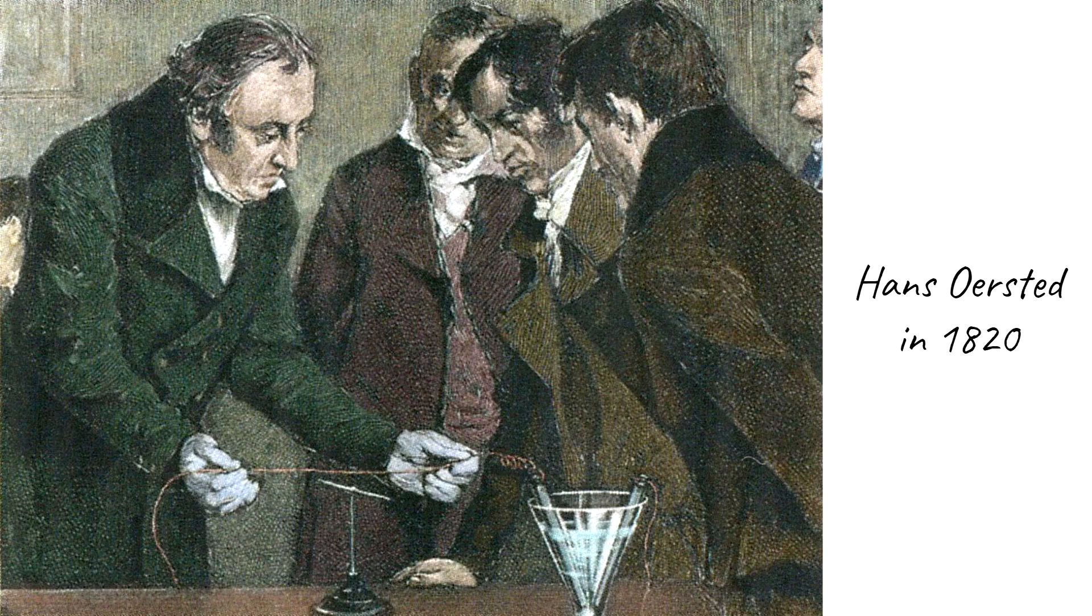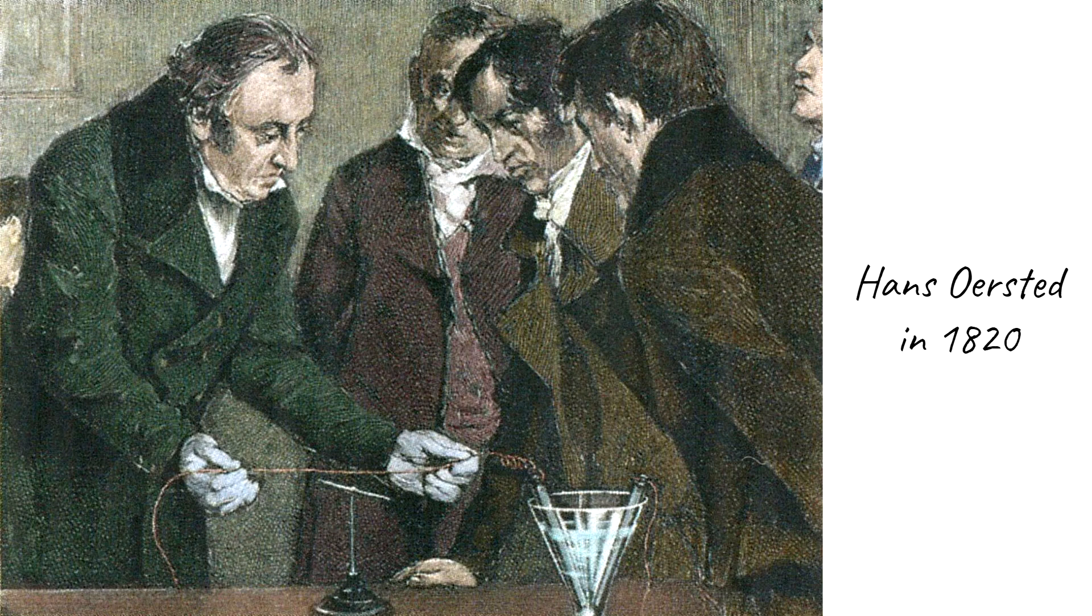In 1820, the physics professor in Denmark named Hans Christian Ørsted is in the middle of a lecture and he is using a compass and an electric wire for a demonstration.